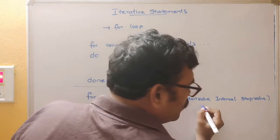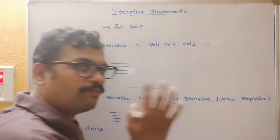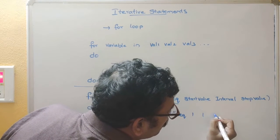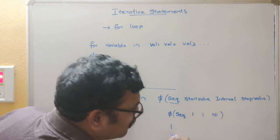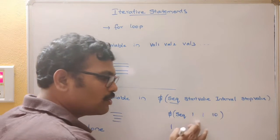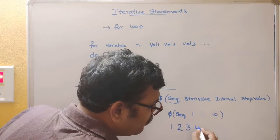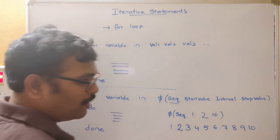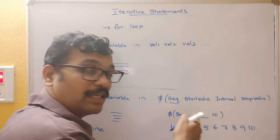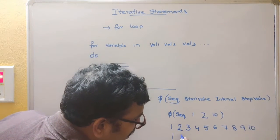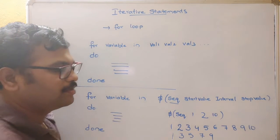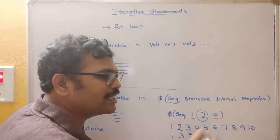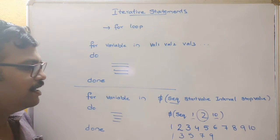Here you use the 'seq' keyword with a start value, an interval between one element and another, and a stop value. For example, 'seq 1 1 10' starts from 1 with interval 1, giving 2, 3, 4, 5, 6, 7, 8, 9, 10. If the interval is 2 and start is 1 stop is 10, you get 1, 3, 5, 7, 9. So the second parameter of seq is the difference between values, the first is start, and the third is stop.